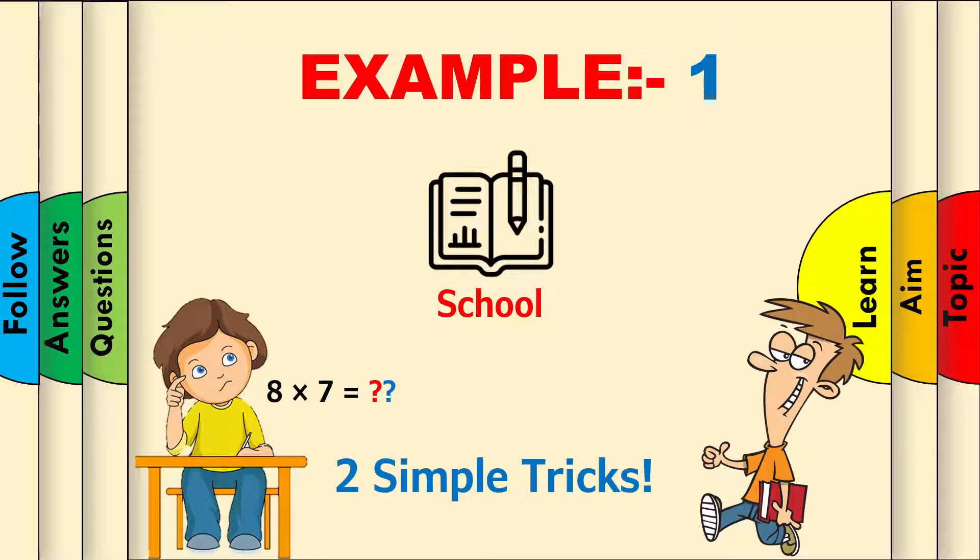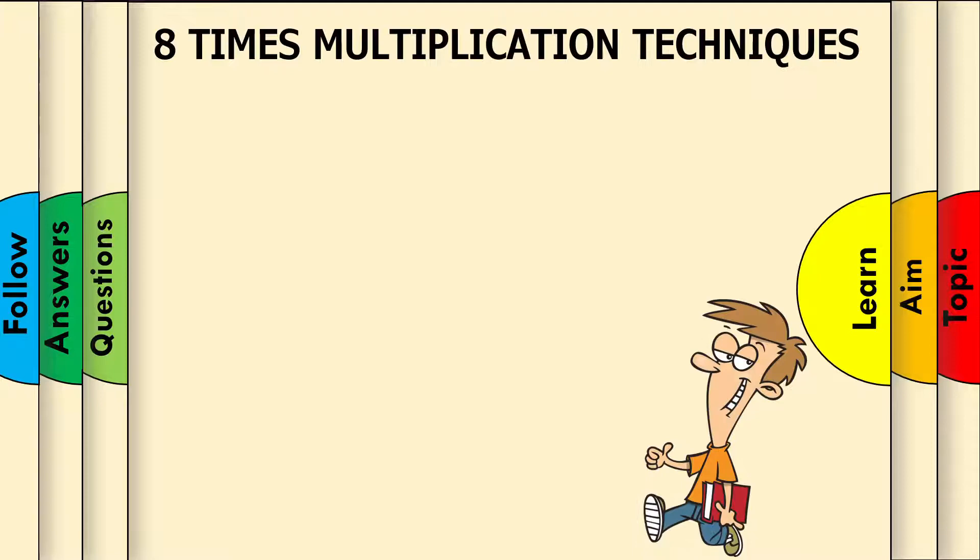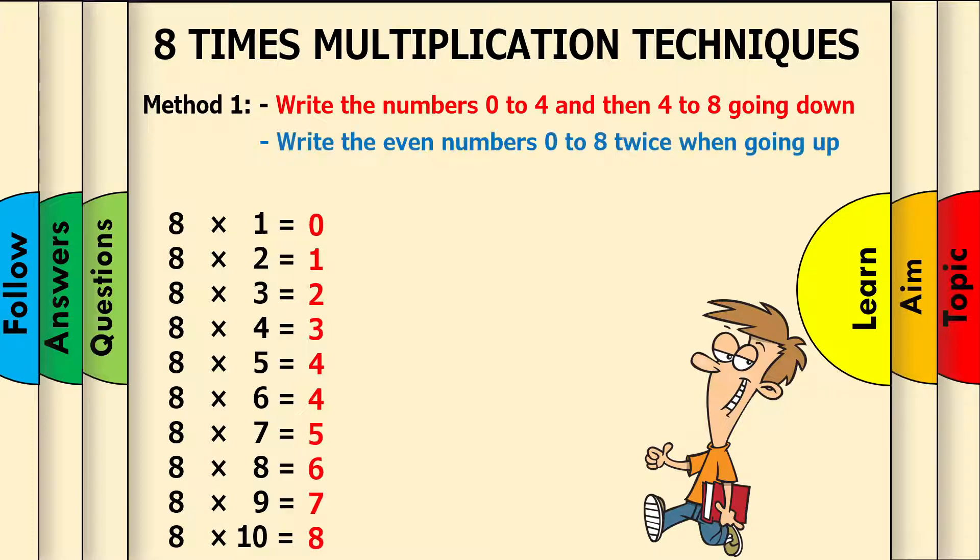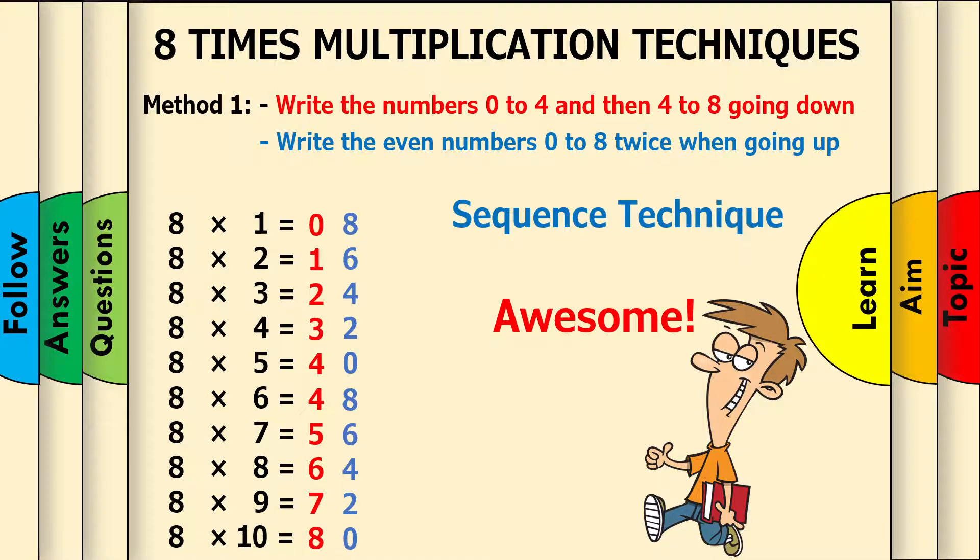I have two simple tricks up my sleeve, just for you. 8x multiplication techniques. Method 1: write the numbers 0 to 4 and then 4 to 8 going down, and then write the even numbers 0 to 8 twice when going up. Awesome! This is called the sequence technique.